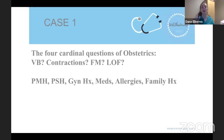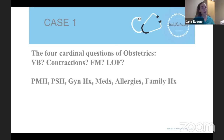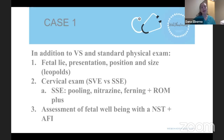When we go to triage to see this patient, we start with the four cardinal questions of obstetrics: Are you having vaginal bleeding? Are you having contractions? Is the baby moving? And are you leaking fluid? These questions are unique to obstetric patients and help assess what's happening with the baby, uterus, and pregnancy. In addition, we ask prior obstetric history, prior surgical history, gynecologic history, medications, allergies, and family history.